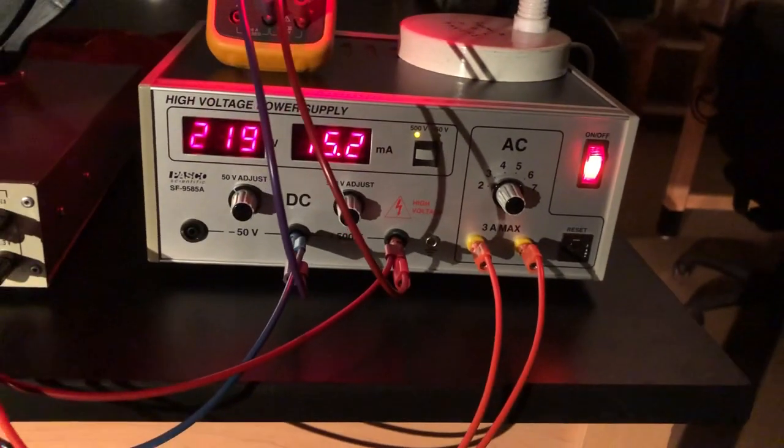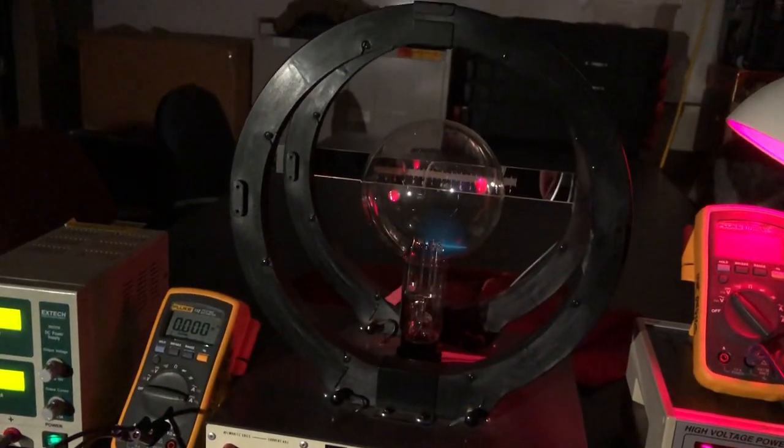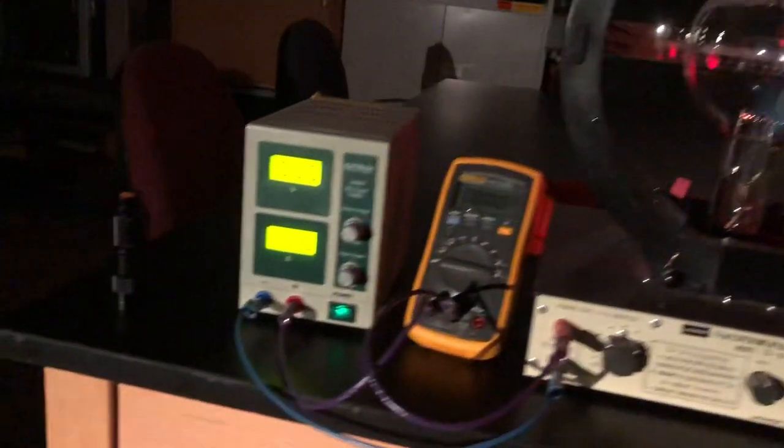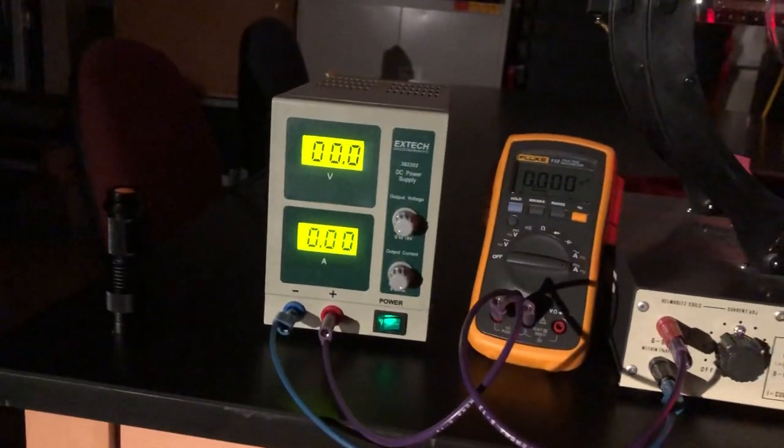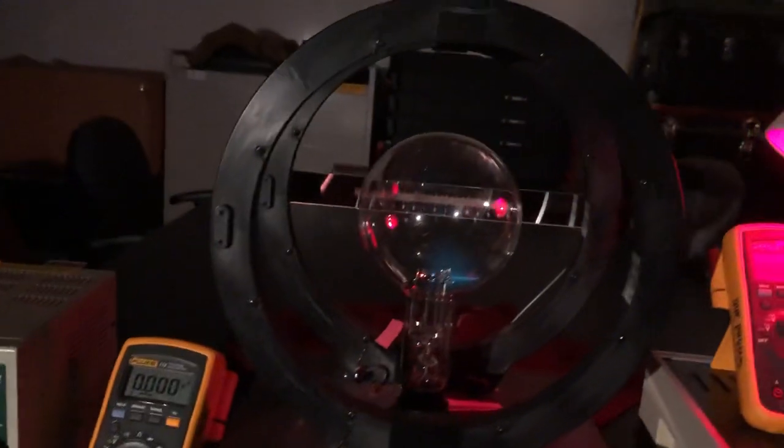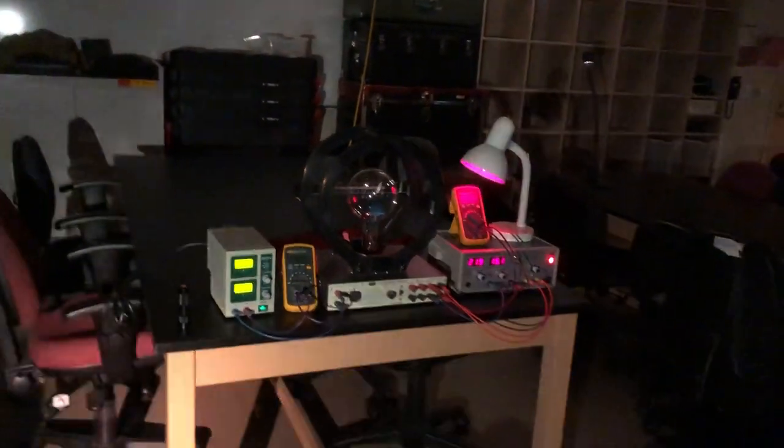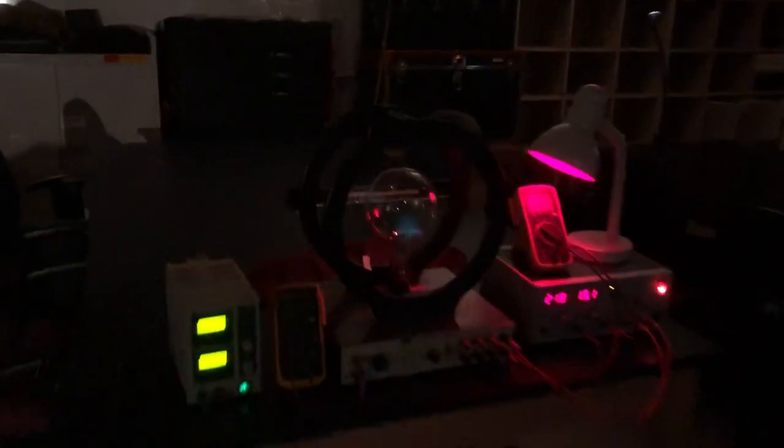This is the high voltage power supply, which is powering up that electron gun and accelerating them to high speeds. And then over here, we have the current source, which is powering current to the coils that wrap around. And those coils can exert a magnetic field on the electrons and change their path.